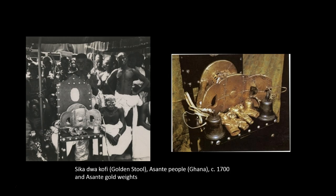Our next artifact is called the Golden Stool, from the Asante people of present-day Ghana, dating around 1700. The Golden Stool is a royal and divine throne of the Asante people. According to legend, the high priest Okomofo Anoki, one of the two chief founders of the Asante confederacy, caused the stool to descend from the sky and land on the lap of the first Asante king, Osetutu. Such seats were traditionally symbolic of a chieftain's leadership, but the Golden Stool is believed to house the spirit of the Asante nation — representing the living citizens, the dead, and the future children who have yet to be born.